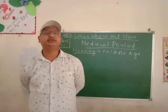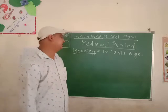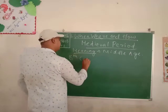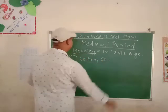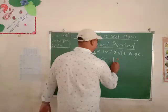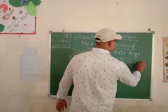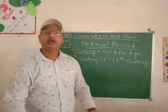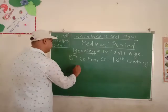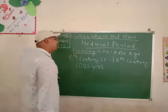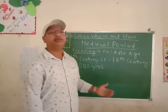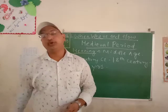The medieval period in Indian history began in the 8th century and came to an end in the 18th century. So it spread about 1000 years. A century means a period of 100 years, so about 10 centuries — the medieval period continued for 1000 years.